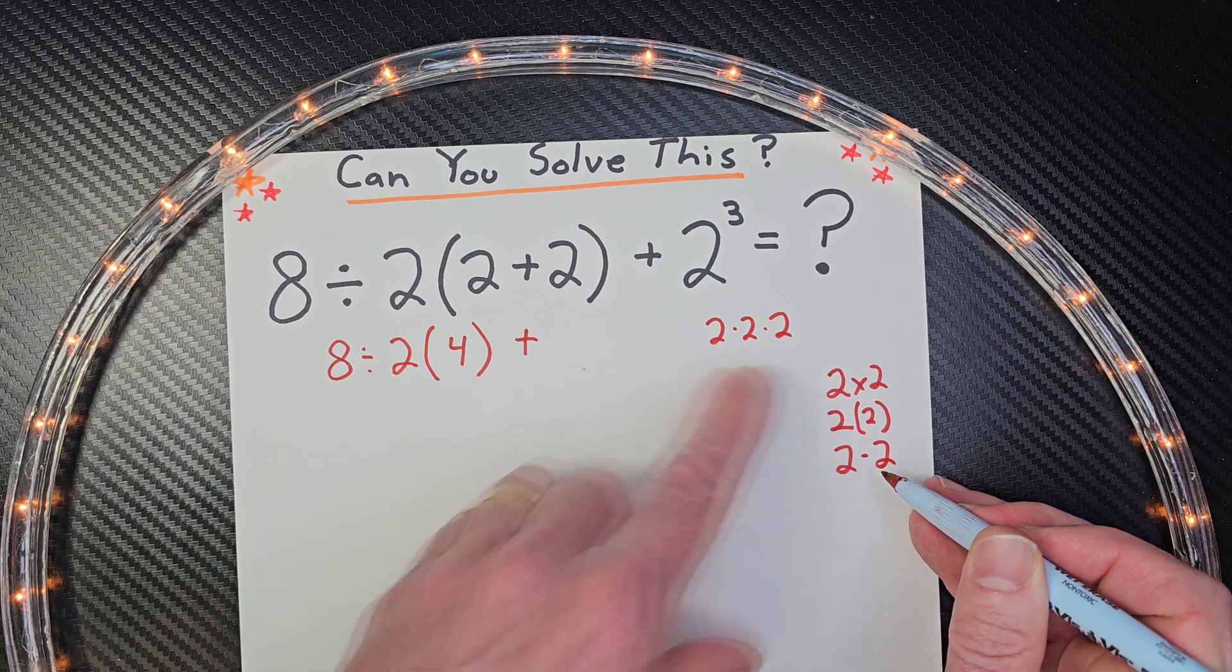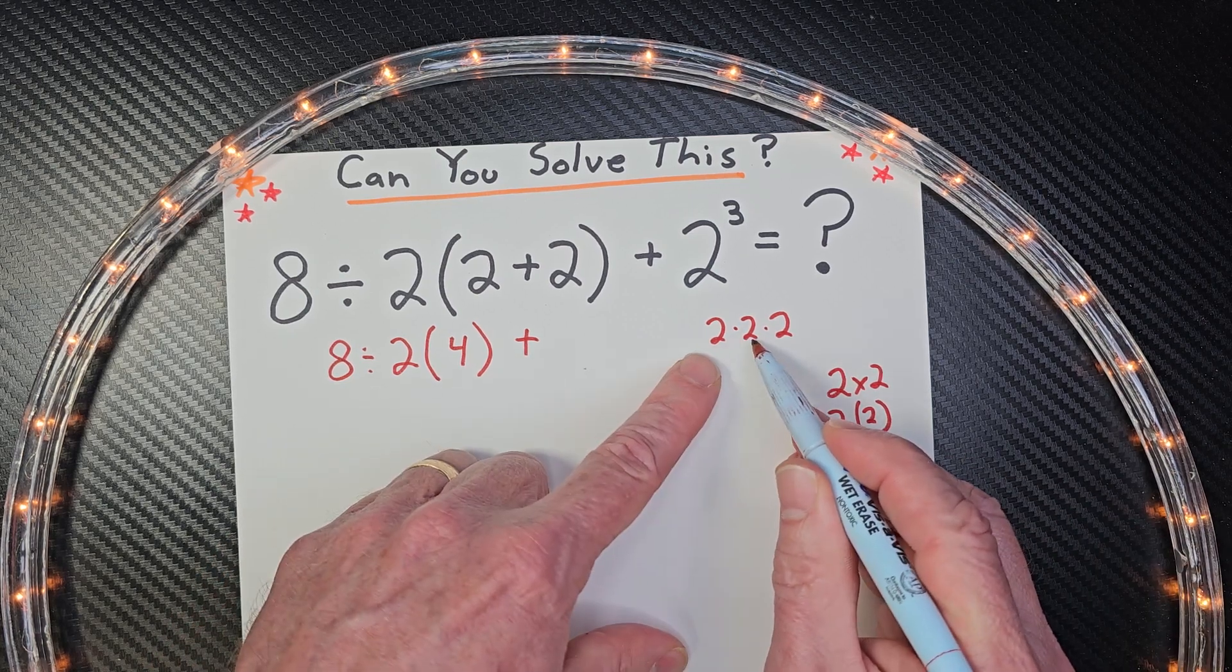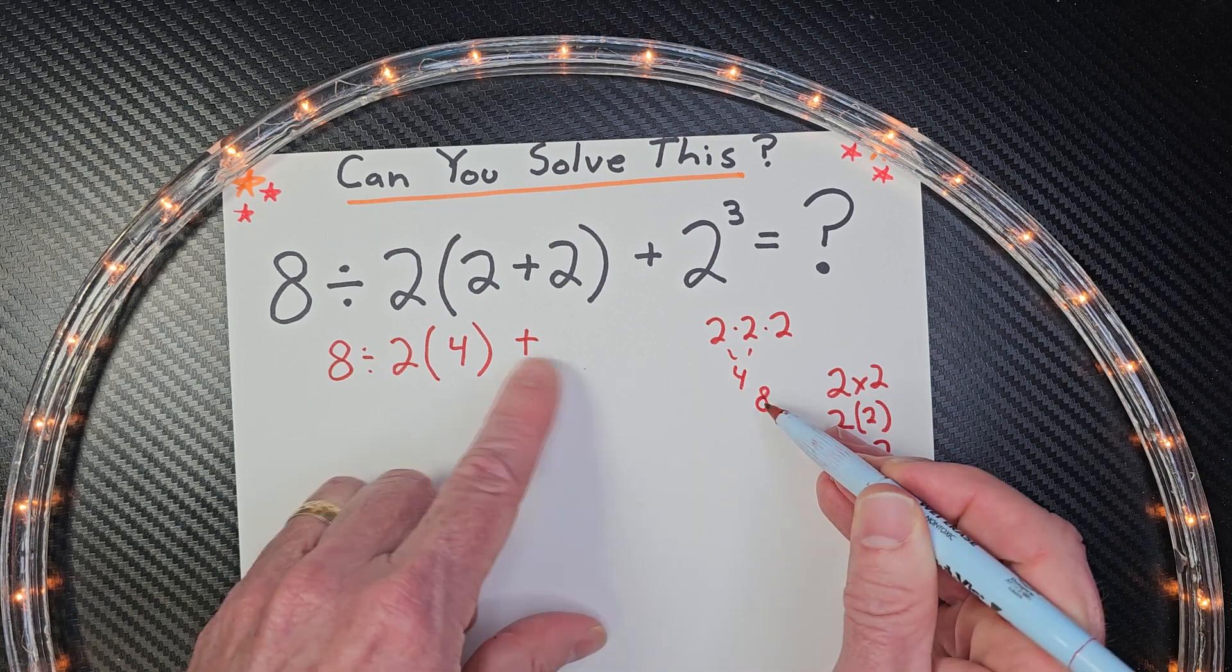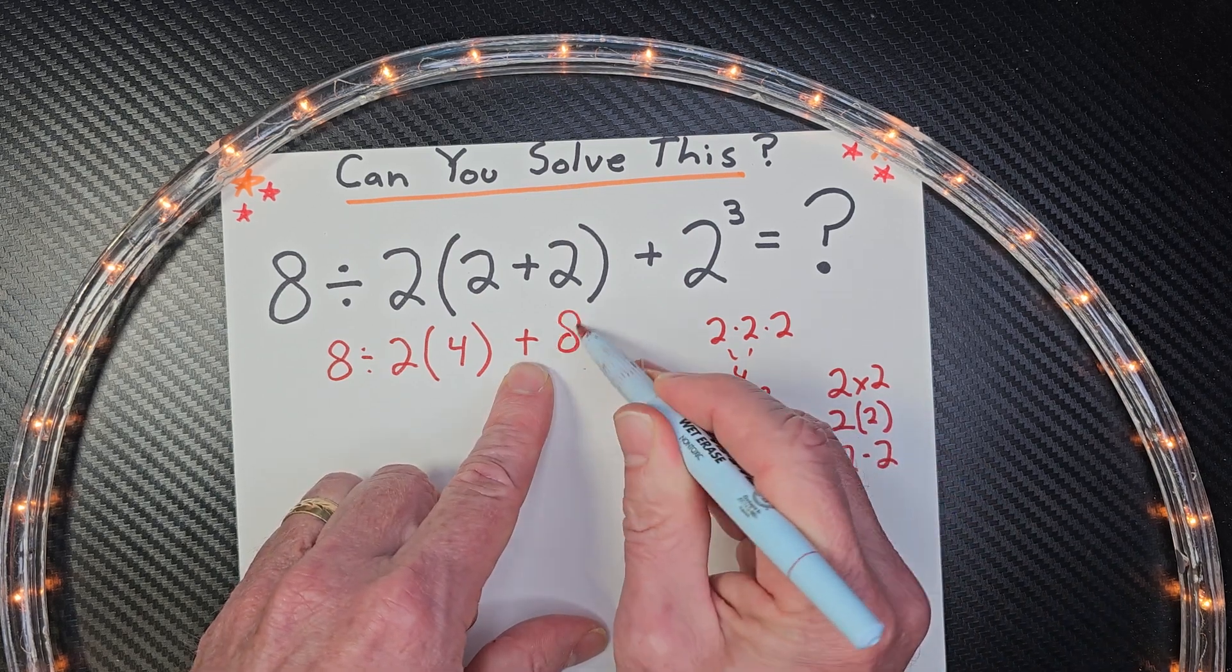So we have 2 times 2 is 4. 4 times 2 would equal 8. So we would add 8 right here.